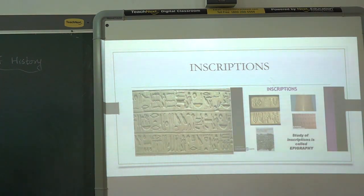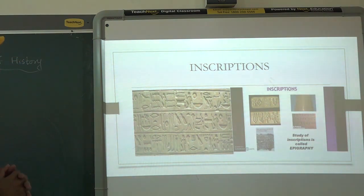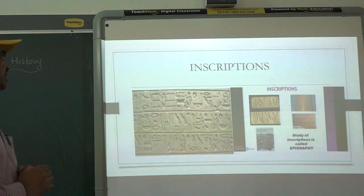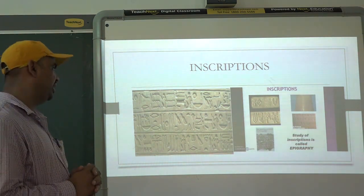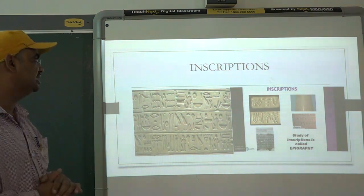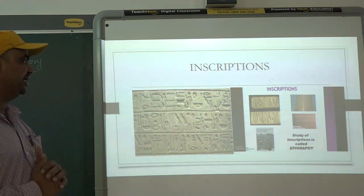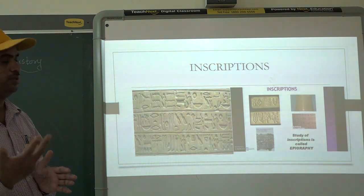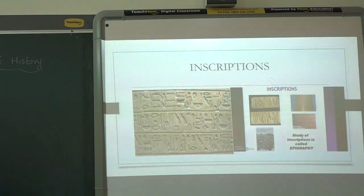Then inscriptions. What are inscriptions? Inscriptions are done on a hard surface. If you are using any hard surface — like walls, copper plates, or rocks — things written on such hard surfaces are inscriptions. If you go to any forts, most of the time you will find some type of inscriptions. What they used to write in inscriptions — they used to write about different wars, and even about kings and rulers, so that people should remember them in the future.